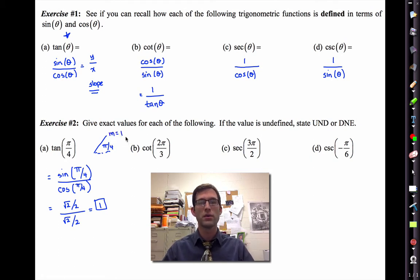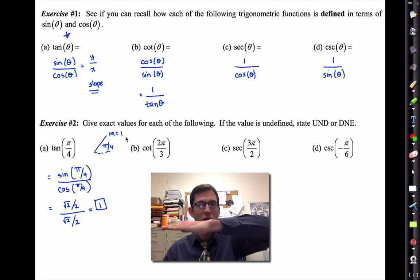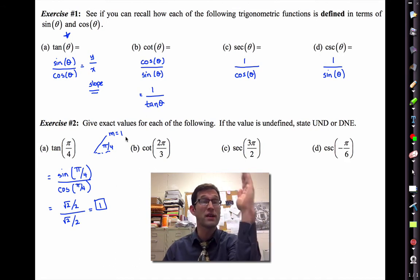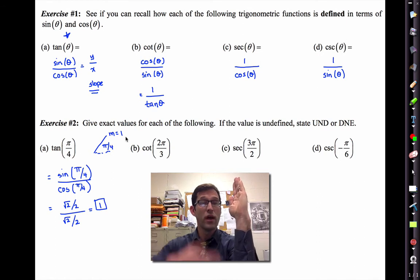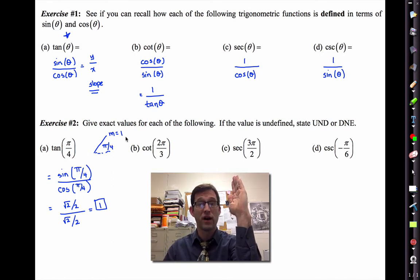If you say, what's the tangent of zero? Well, that's going to have a slope of zero. On the other hand, if you ask what's the tangent of pi over two, that's going to have a slope that's undefined.